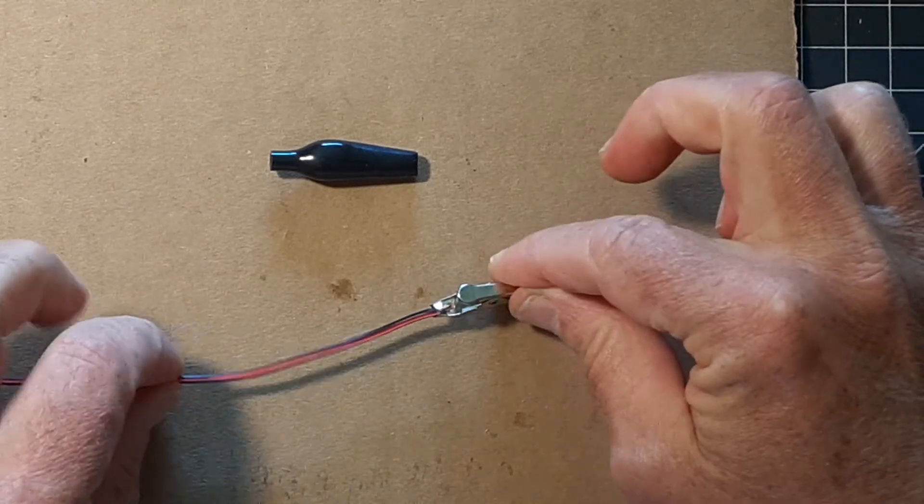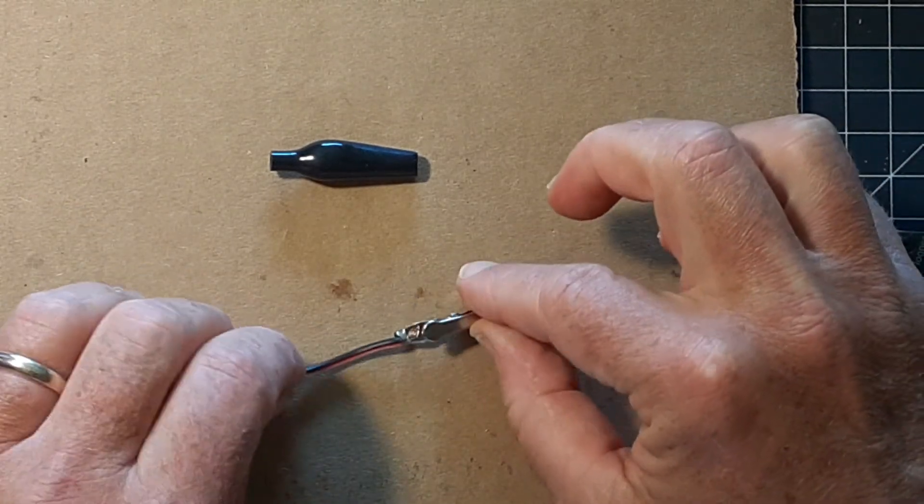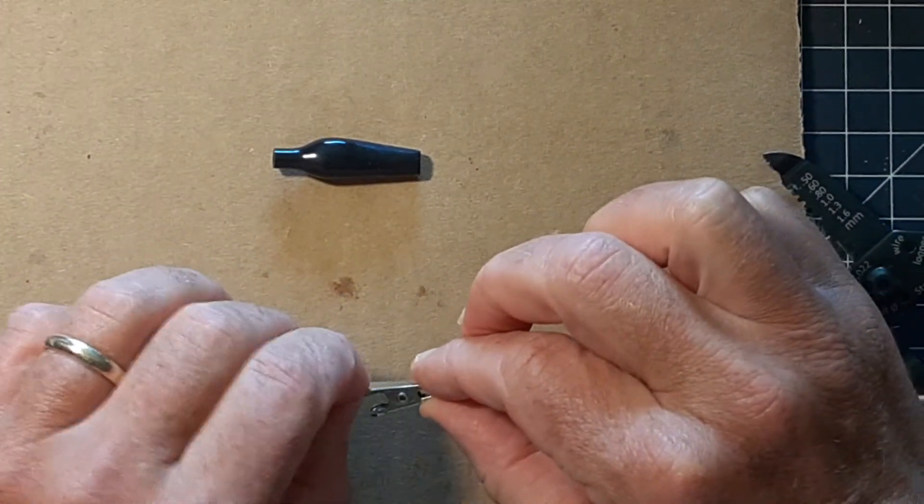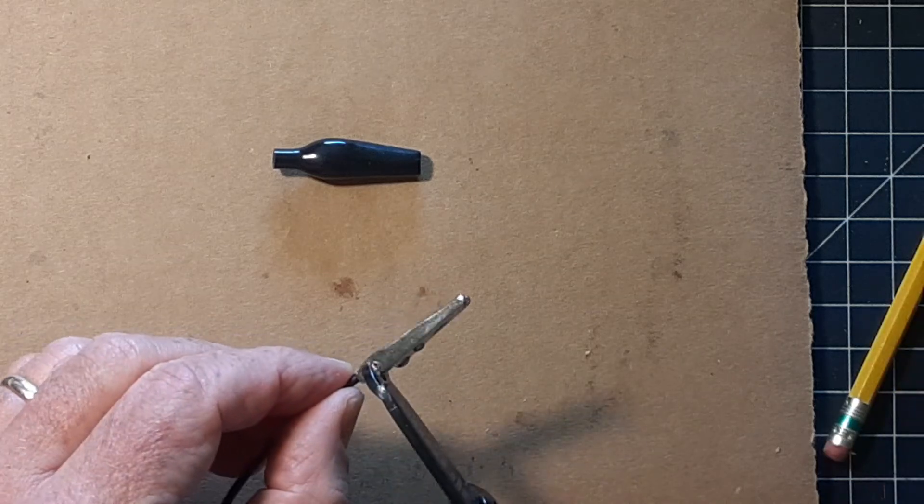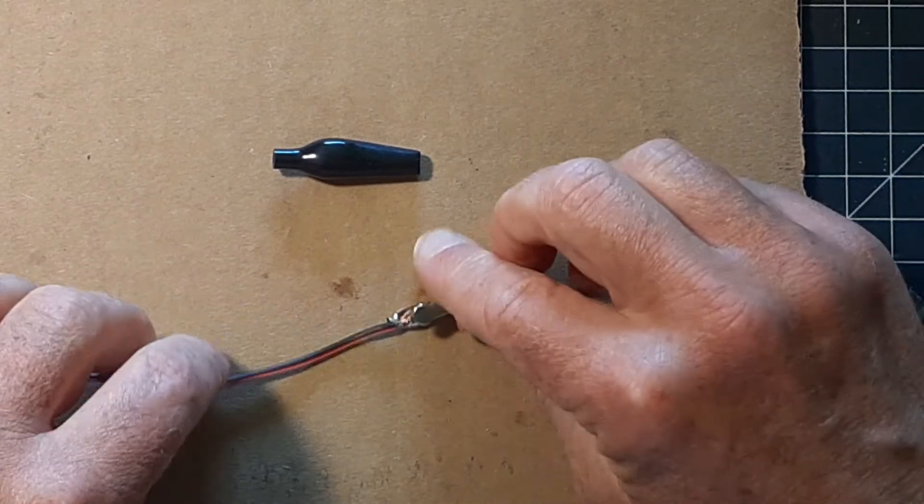So the wire is snug there, but to make it electrically tight we're going to put some solder in there.